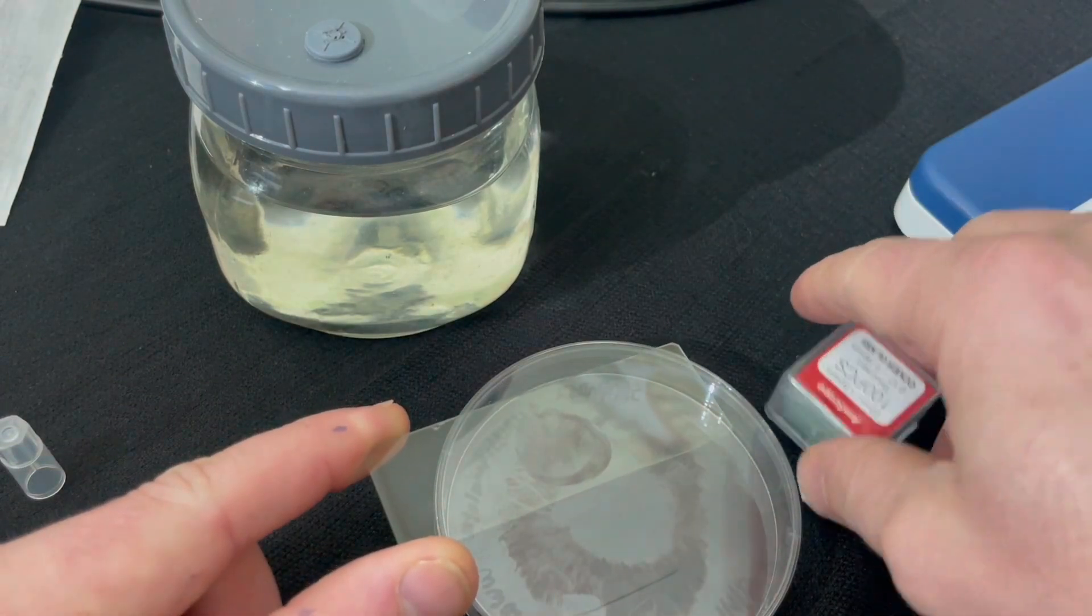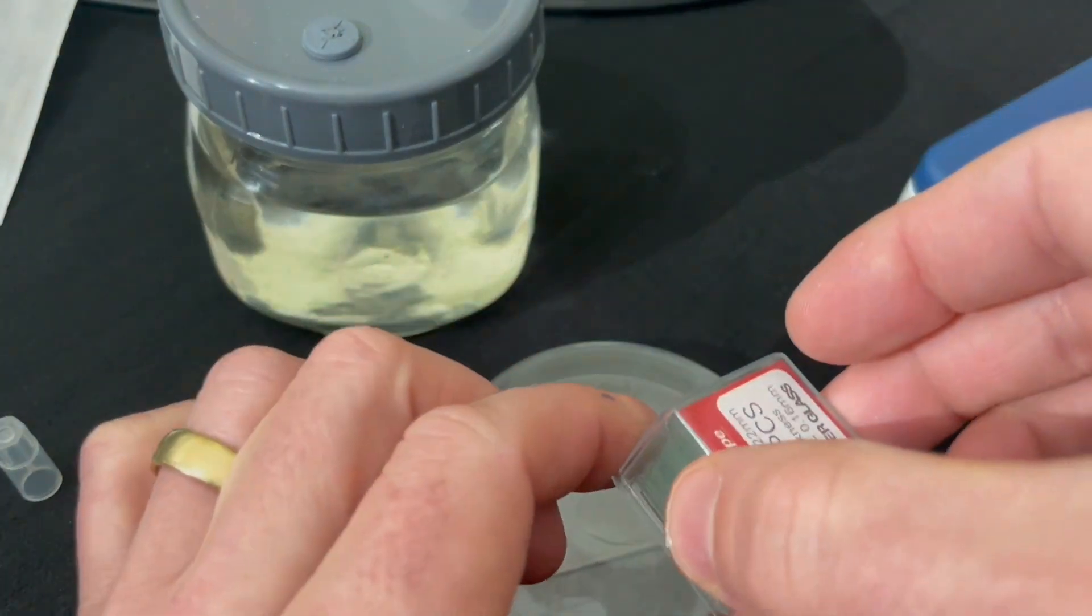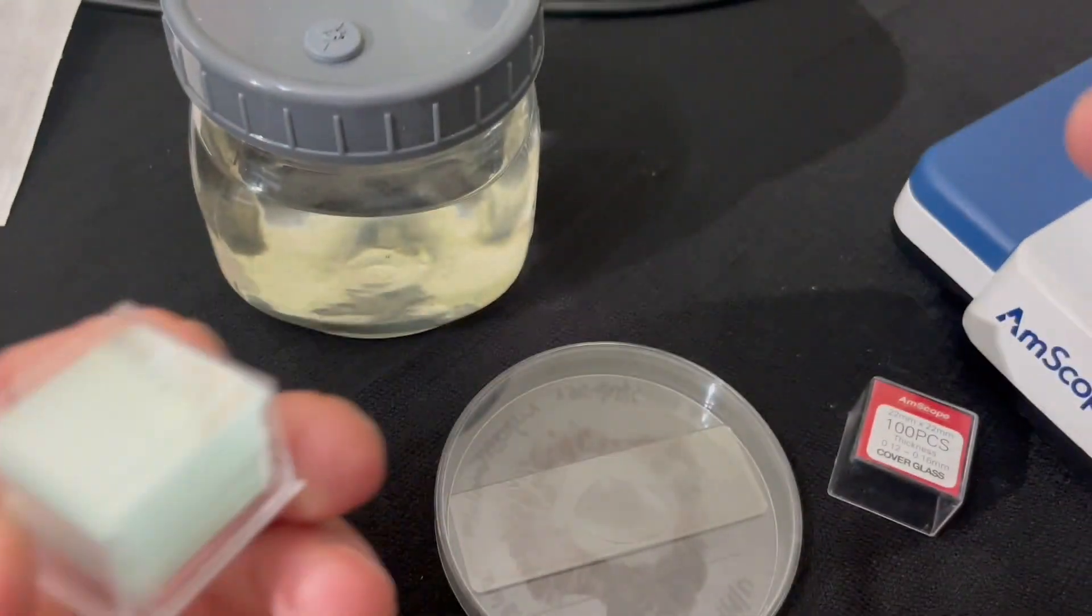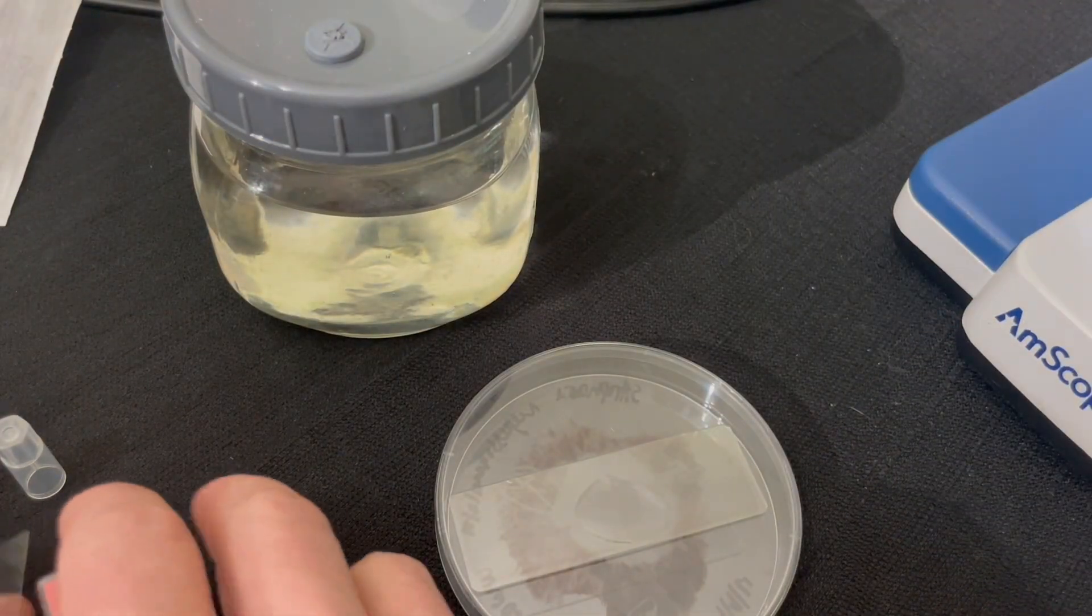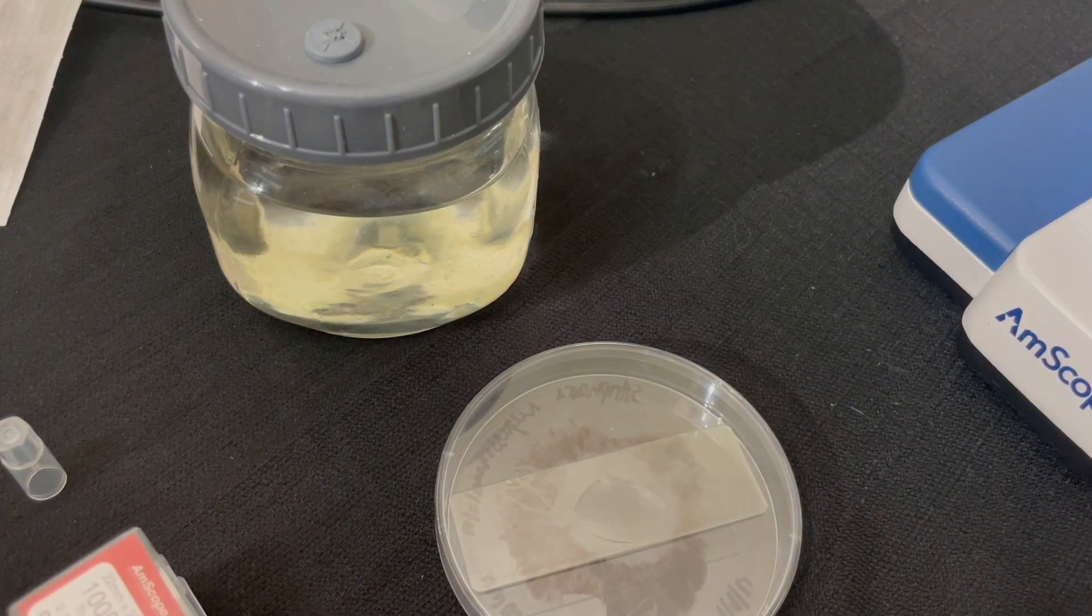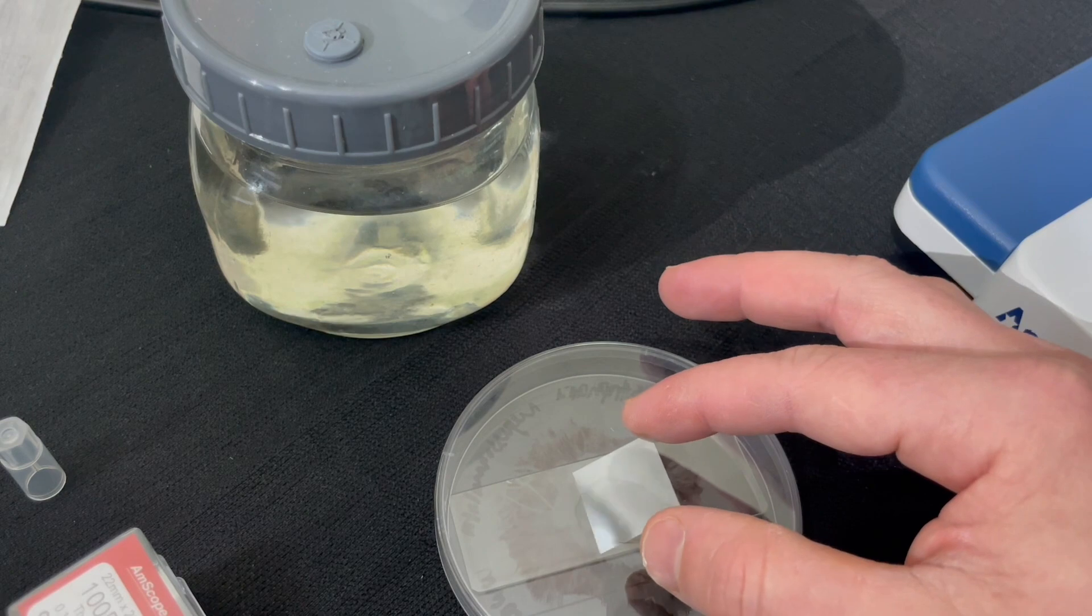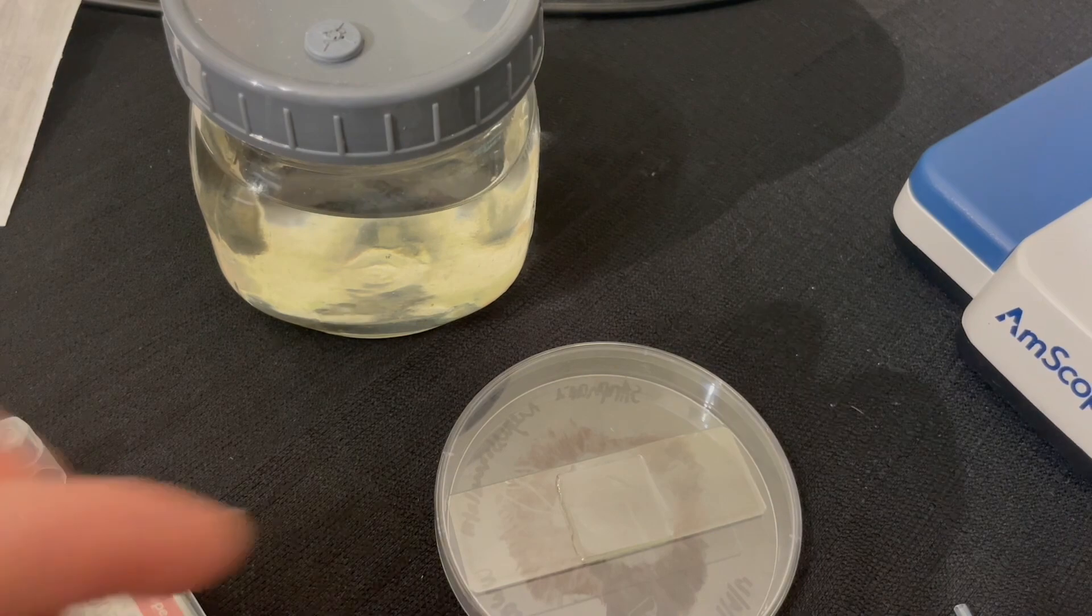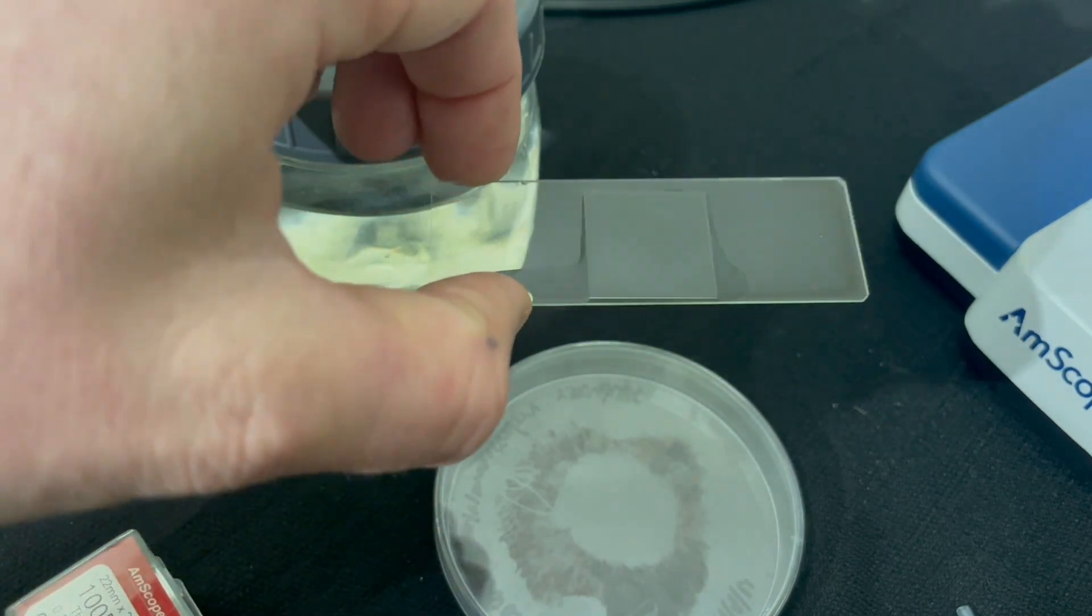And now I'm going to grab some slide covers or just one slide cover. The trick to not getting any air bubbles is just putting it at an angle and then dropping it on. There you go. We have our slide prepared to measure the spores.